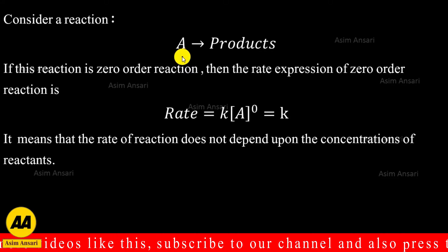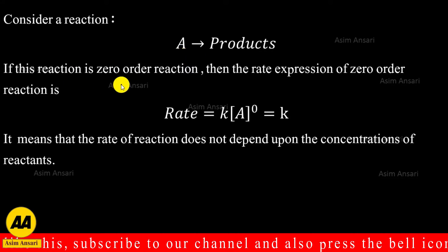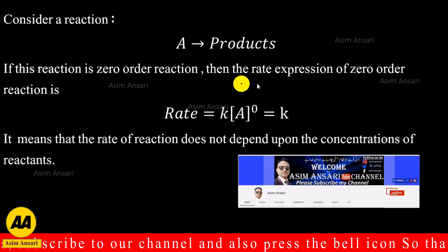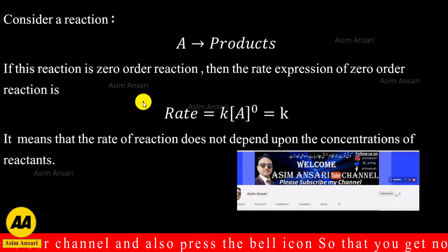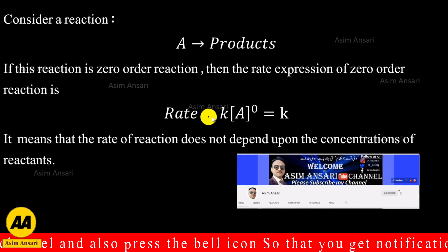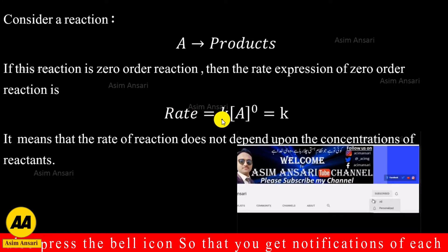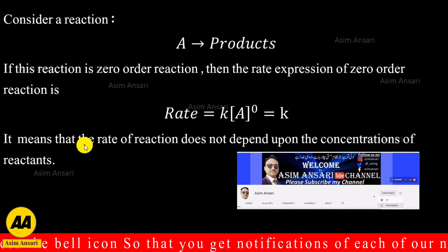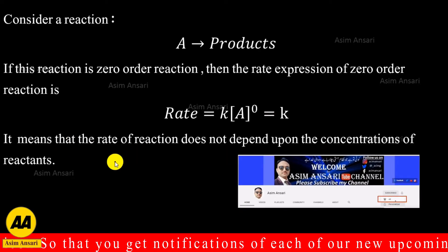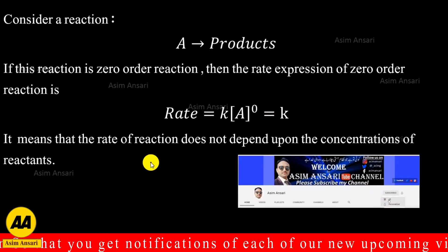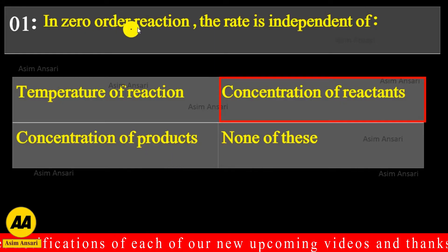Consider a reaction A converted into product. If this reaction is zero order, then the rate expression is: rate = K × [A]⁰ = K. This means the rate of reaction does not depend upon the concentration of the reactant. So the correct answer is: concentration of reactants. In a zero order reaction, the rate is independent of concentration of reactants.